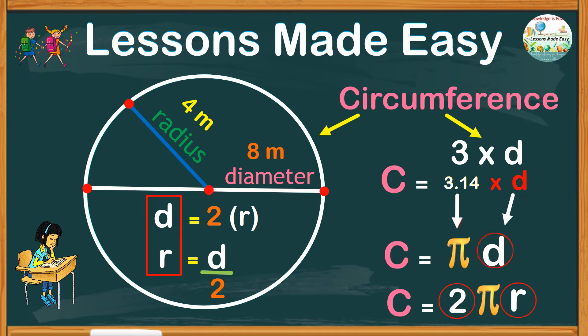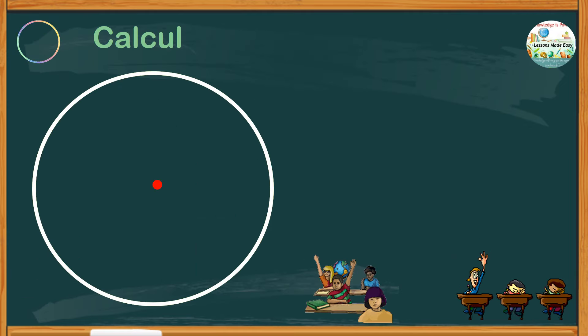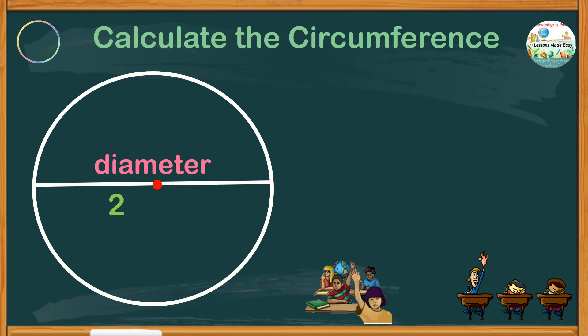To further understand this concept, let's try to answer a few exercises. Try to calculate the circumference of a circle with a diameter of 20 centimeters.